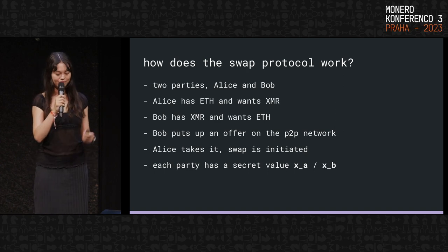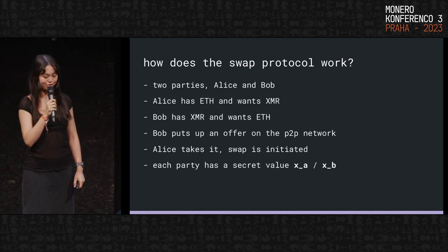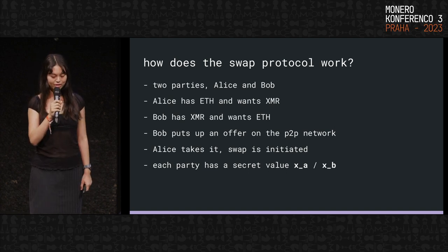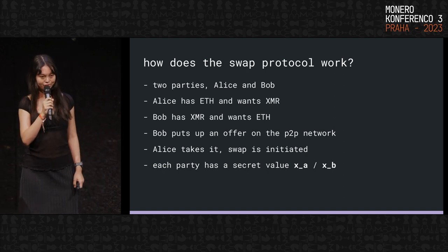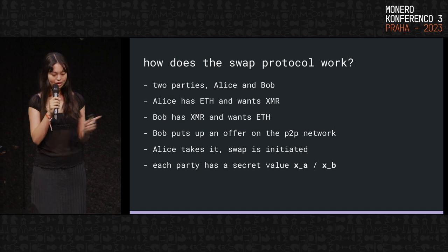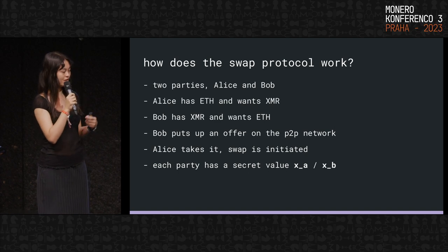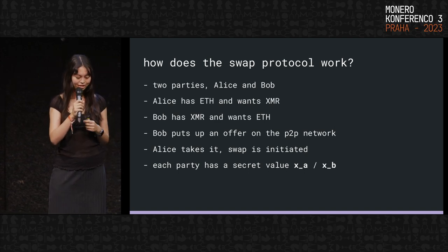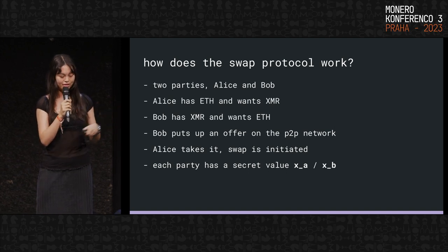I'll talk more about how the architecture looks later, but first I'll go into how the protocol actually works. This will be the most technical part of the talk. Say we have two parties, Alice and Bob. Alice has ETH and wants Monero, and Bob has Monero and wants ETH. The swap has a P2P network built in, so Bob will put up an offer on the P2P network and then Alice can find it. Alice then takes it and the swap is initiated. Each party has a secret value — Alice's is XA and Bob's is XB.